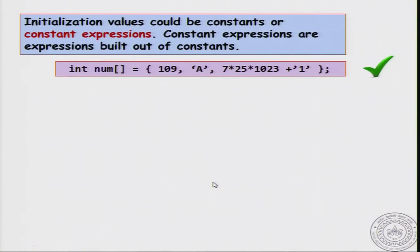Now, just like size can be not just numbers, it can also be constant expressions. We can also have constant expressions as initialization values. For example, I can give num = {109, then the character value 'A', character value 'A' means it will take the ASCII value of A, 65 or whatever it is. The first number will be 109, the second number will be 65, let's say if the ASCII value of A is 65, and the third value will be 7*25*1023 plus the character constant '1'. Whatever the ASCII value of the character '1' is, let's say 90 or something, it will be added to this constant expression and it will be initialized to that value. Num[2] will be the result of evaluating this expression.